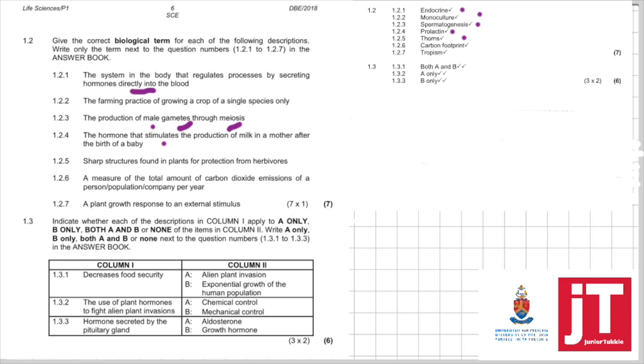1.2.6. The measure of the total amount of carbon dioxide emissions of a person, population, company per year. Total amount of carbon dioxide emissions, that can only be the carbon footprint. And then 1.2.7. Plant growth response to an external stimulus. It just said external stimulus. It didn't tell you what stimulus. So here, the answer is quite easily tropism. 1.3. Indicate whether each of the descriptions in column 1 apply to A only, B only, both A and B or none of the items in column 2. Write A only, B only, both A and B or none next to the question numbers in the answer booklet. This question is only three of them. Many learners do not follow the instructions in the question. And as a result, they lose all six marks. Make sure here you follow the instructions.